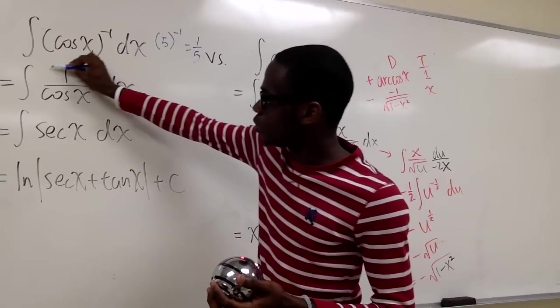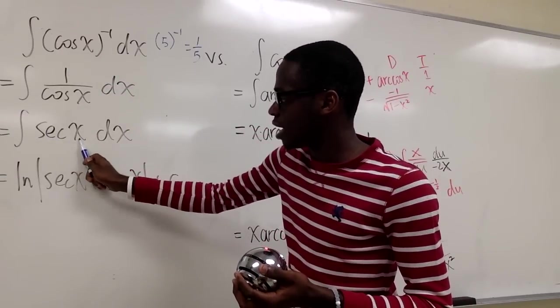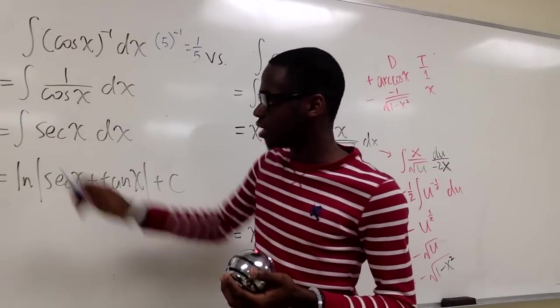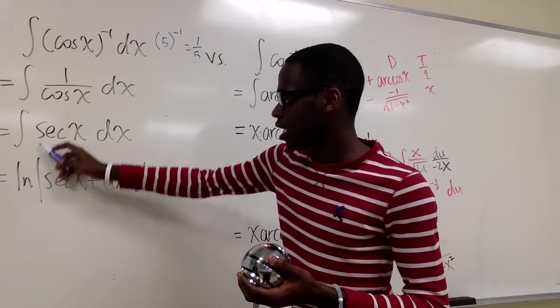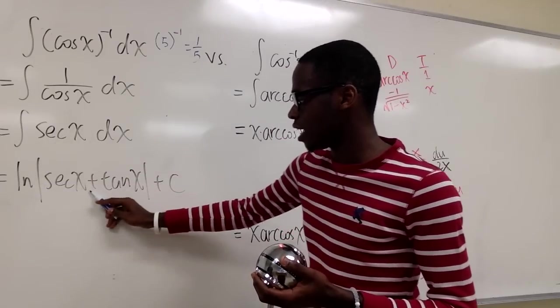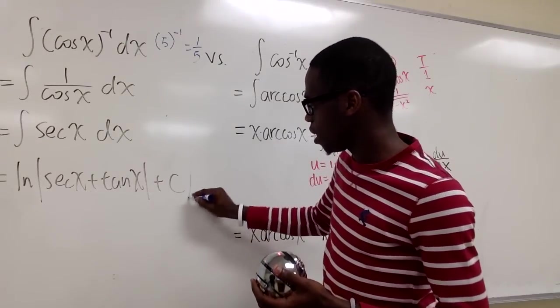And we know that this is the same as having secant x dx. And the integral of that in the integral table in the book is ln absolute value secant x plus tangent x plus c. And we are done.